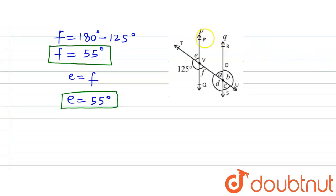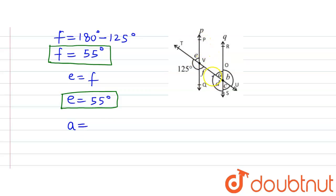Since P is parallel to Q and TU is a transversal, angle F and angle A are alternate interior angles. We know that alternate interior angles are equal when two lines are parallel and a transversal passes through them. So angle A is equal to angle F, meaning angle A is also 55 degrees.